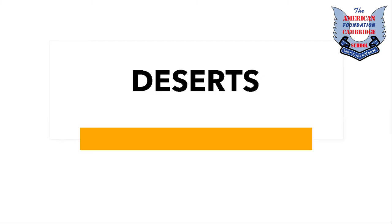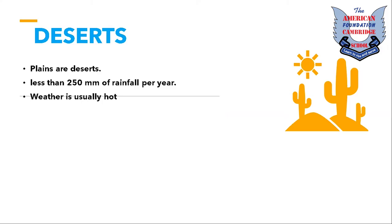The weather in deserts is usually hot but it becomes cool at night. Why? Deserts are cold during the night because of the sand — sand cannot hold heat. It needs a constant source of energy to stay warm, which is the sun. Since the sun is not present at night, the sand loses all its heat, making desert nights cold.